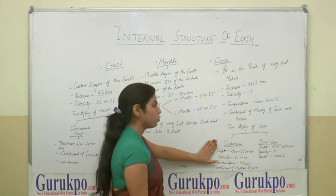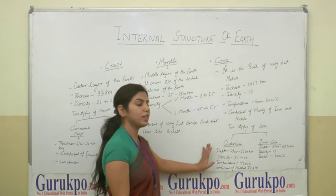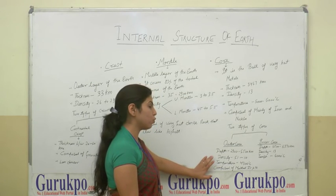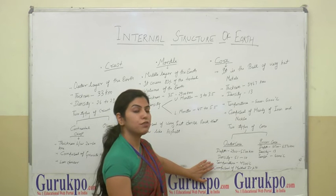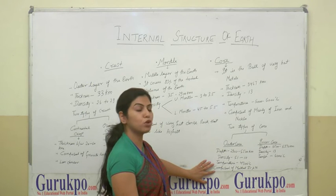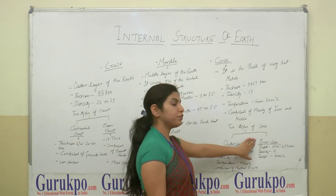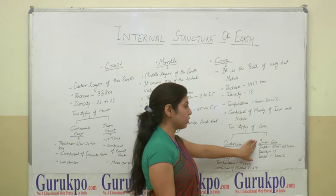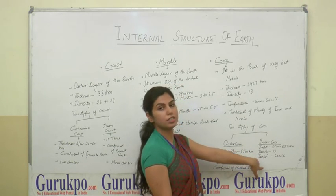There are two types of core: outer core and inner core. The depth of the outer core is 2,900 to 5,150 kilometers, its density is 5.1 to 10, and the temperature is 4,300 degrees centigrade. It is composed of melted iron and nickel. The inner core depth extends to 6,370 kilometers, the density is 13, and the temperature is 6,000 degrees centigrade.